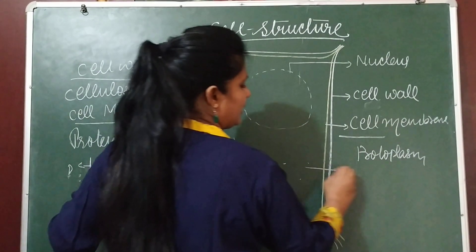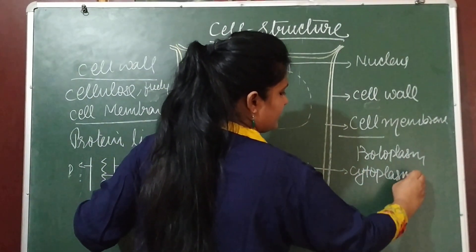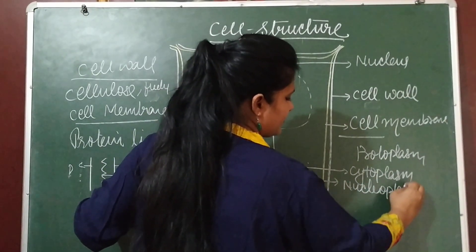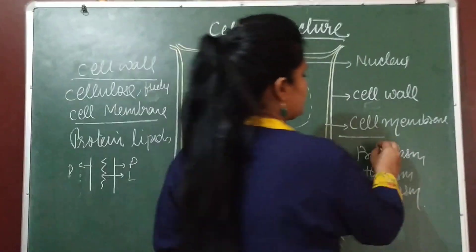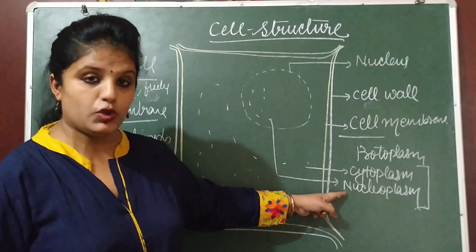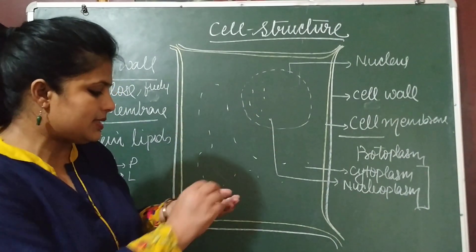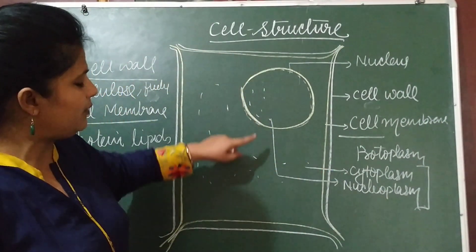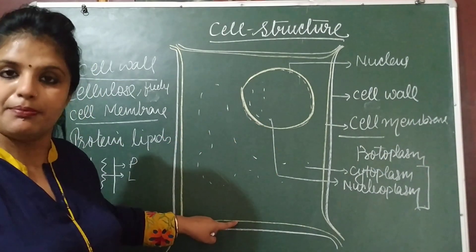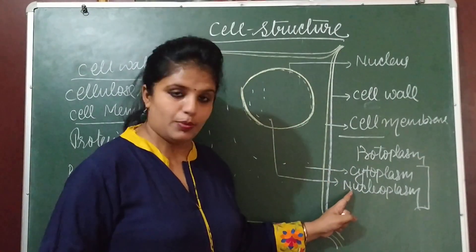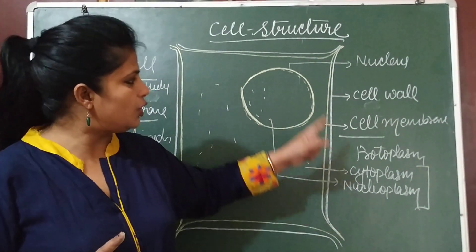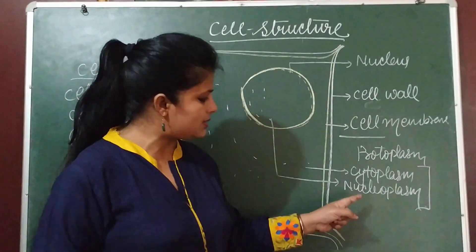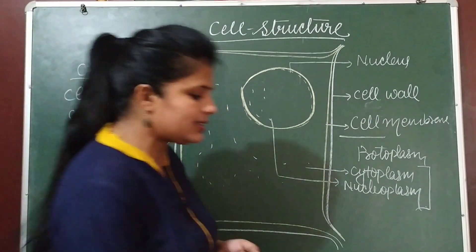Protoplasma consists of two liquid materials: cytoplasma — the liquid present between the cell membrane and the nuclear membrane — plus nucleoplasma, the liquid material inside the nucleus. Nucleoplasma is inside the nucleus, and cytoplasma is between the nuclear membrane and the cell membrane. Another important difference is that nucleoplasma is denser than cytoplasma.